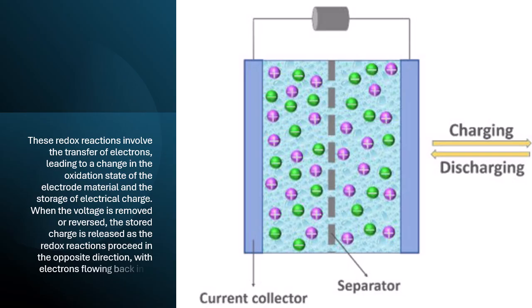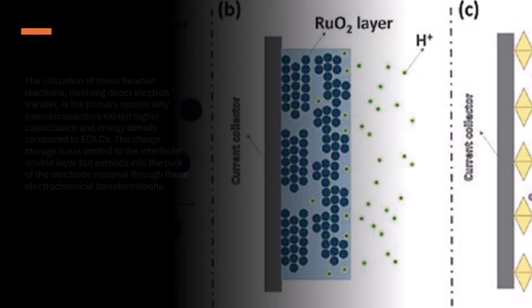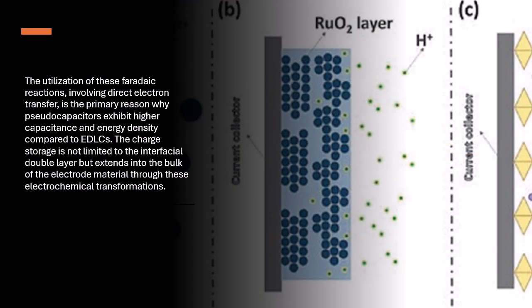When the voltage is removed or reversed, the stored charge is released as the redox reactions proceed in the opposite direction, with electrons flowing back into the external circuit.